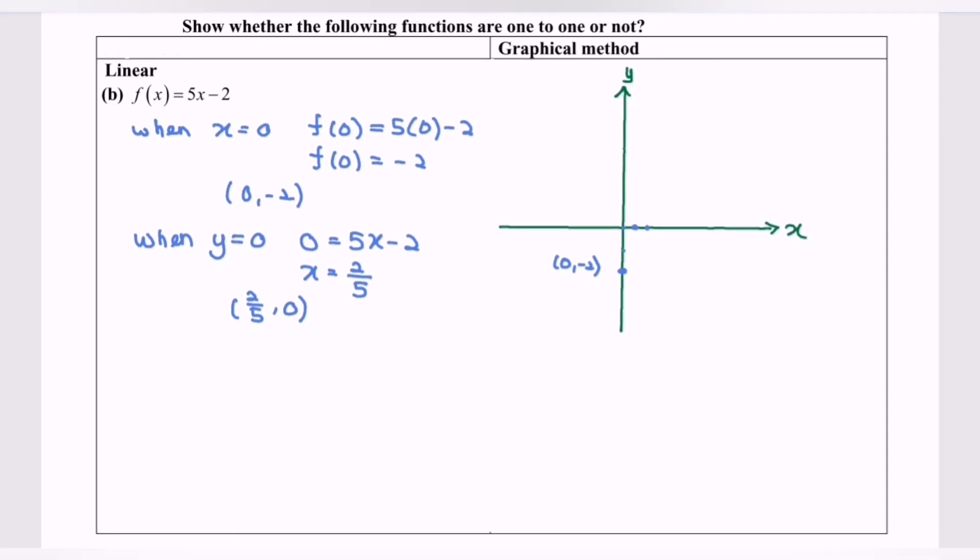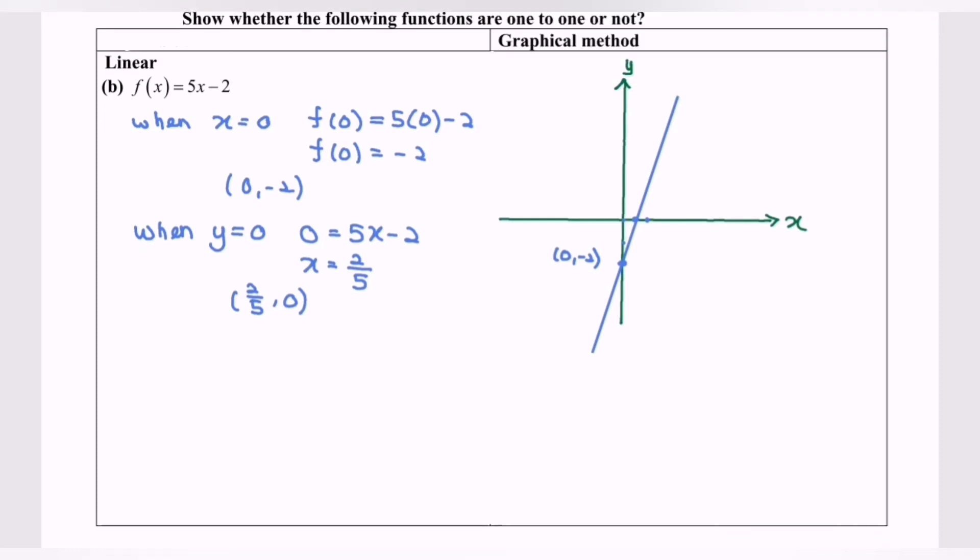Now I'm going to draw a line with a ruler. Do remember to name it: f(x) equals 5x minus 2.